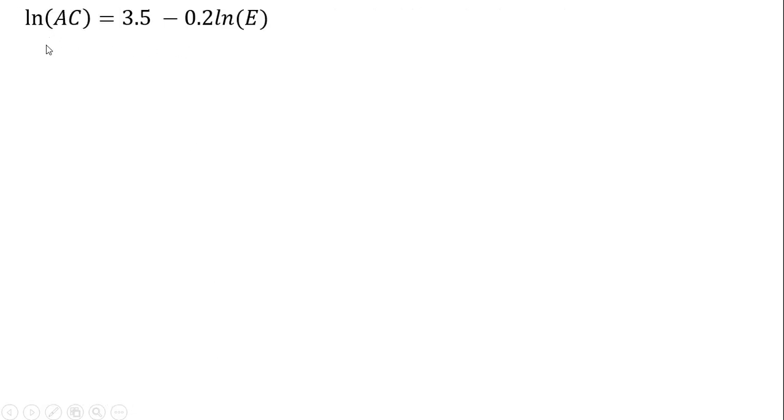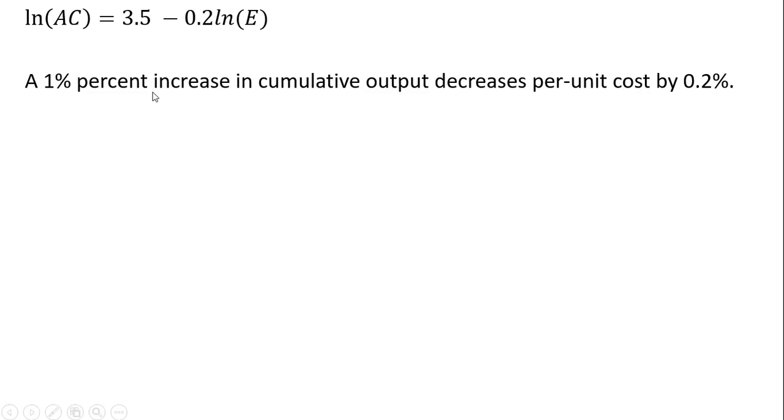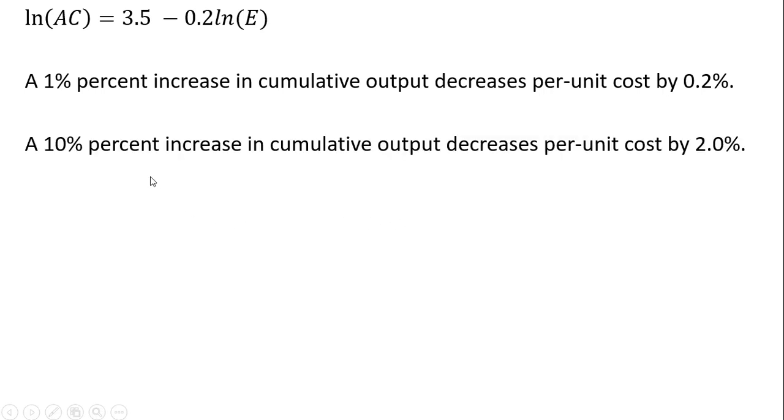So let's do a numerical example. In this particular case, a 1% increase in cumulative output decreases per-unit cost by 0.2%. Or we could say a 10% increase in cumulative output decreases per-unit cost by 2%.